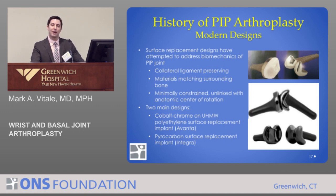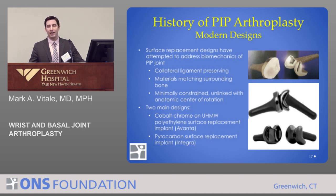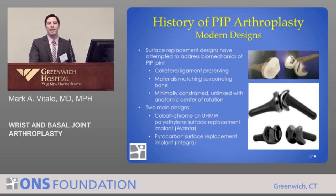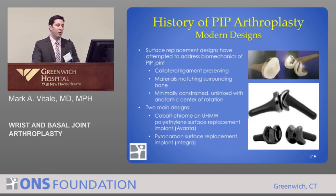Newer surface replacement designs have not fared much better. There are two main designs: the Avanta design, which looks like a mini total knee — it has a cobalt chrome component and a polyethylene component covered with a thin titanium shell — and a pyrocarbon implant that attempts to recreate the natural anatomy of the PIP joint. The benefits of these implants are that they preserve the collateral ligaments, their materials match the elasticity modulus of surrounding bone, and they are minimally constrained.